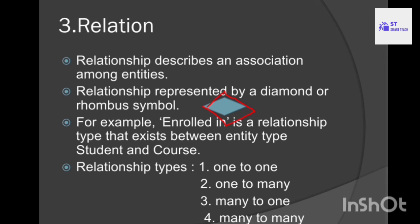Relationship types: there are four relationship types in the ER model. The first one is one-to-one relation, one-to-many relation, many-to-many relation, and many-to-one relation. I will discuss these types in a separate video.